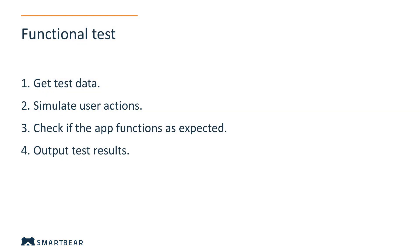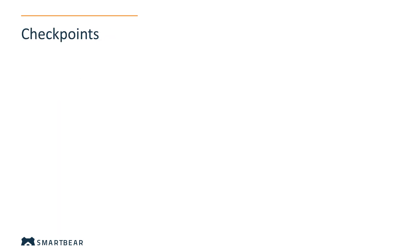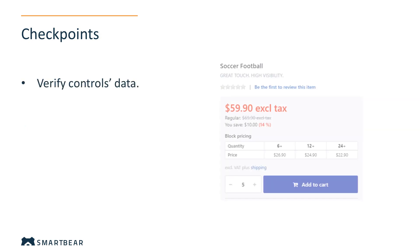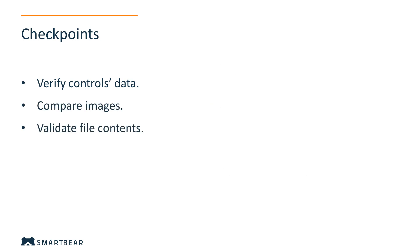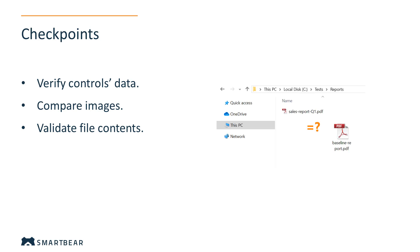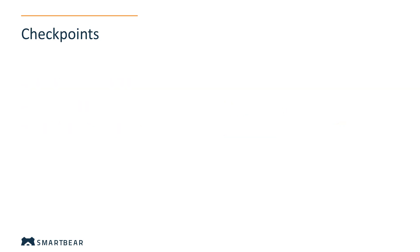Checkpoints work without user interaction and help you automatically ensure the tested application works as expected. You may need different check types in your tests. For example, you may need to check if a control has expected data, or whether the tested application displays an expected image, or if a report file matches its baseline copy. TestComplete offers a number of checkpoint commands for typical verification.